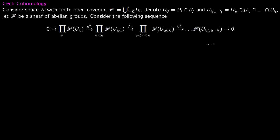Then you have this notation U_{i_0, i_1, ..., i_k} which means this intersection, just like we had in the circle example. For example, U_{1,2,3} means the intersection of U_1 intersection U_2 intersection U_3. Let this curly script F be a sheaf of abelian groups.